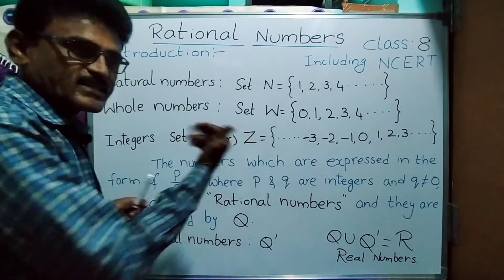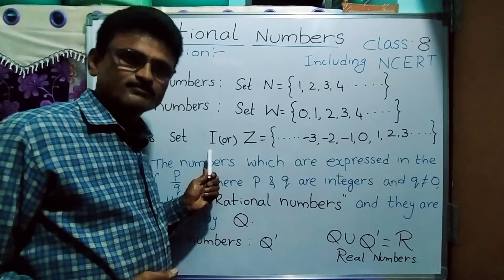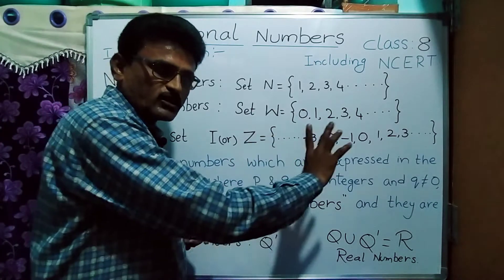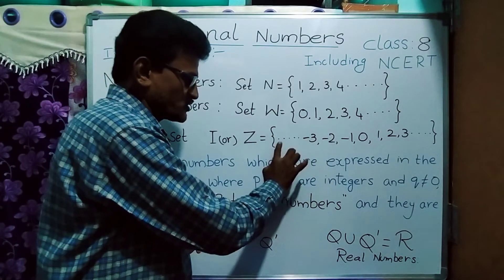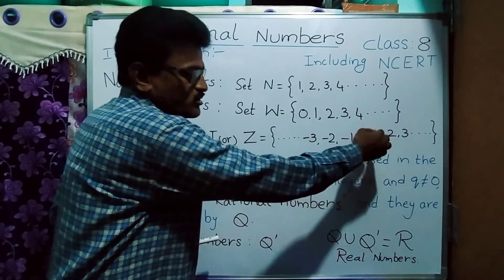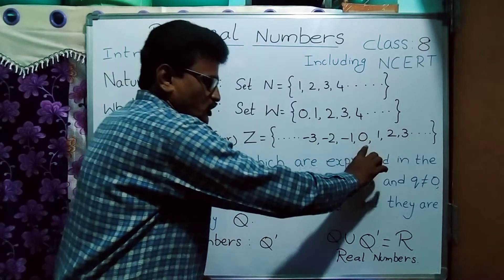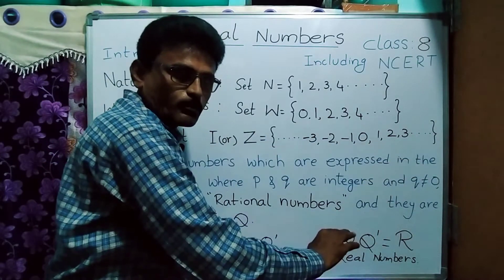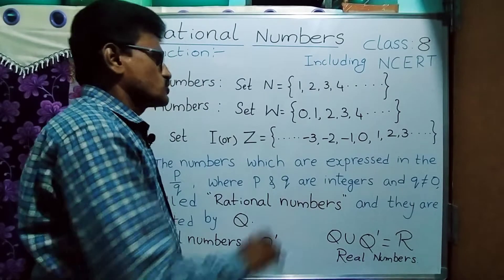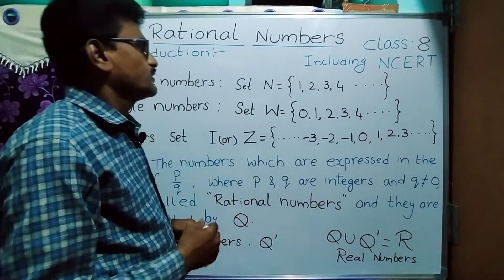That different set is the integer set. Integers are denoted by capital I, or in some books capital Z (J). The set is represented with dots: ... minus 3, minus 2, minus 1, 0, 1, 2, 3, 4, and so on. Zero is on the right side with positive numbers, and on the left side are negative numbers. This set is said to be integers.